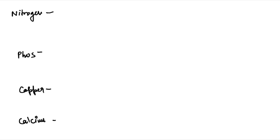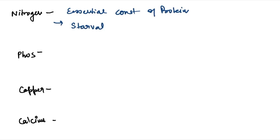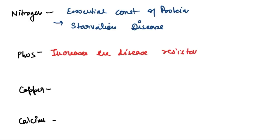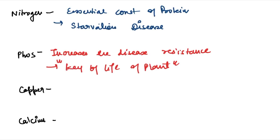Some facts: nitrogen is an essential constituent of protein. Another disease caused by nitrogen deficiency is starvation disease. A key fact about phosphorus is that it increases disease resistance of crops, and due to deficiency of phosphorus alone, the life cycle of a plant cannot be completed — so phosphorus is known as the 'key of life' of the plant.